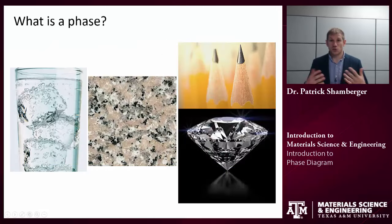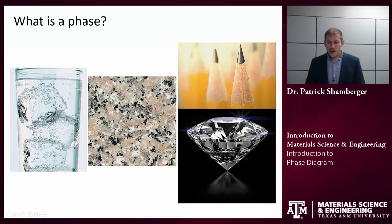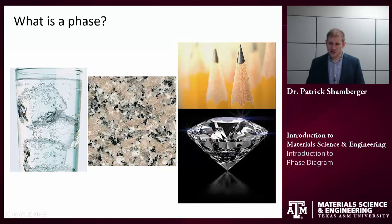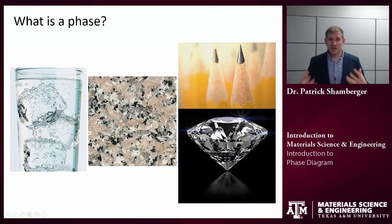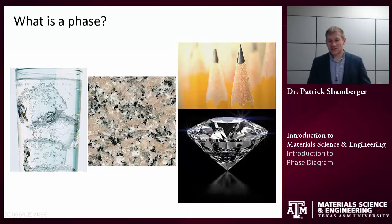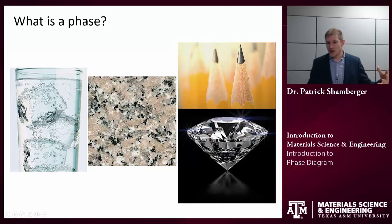The first thing we need to talk about is: what's a phase? A phase is a form of matter that has distinct properties from other phases in the system. One definition is that you can consider chemically separating it out from other phases on some scale. Two different phases could have the same composition. One perfect example of that is ice and liquid water — they're both H2O, composed of the same molecules, yet one has a crystalline structure (ice) and one is a liquid. So those are different phases.